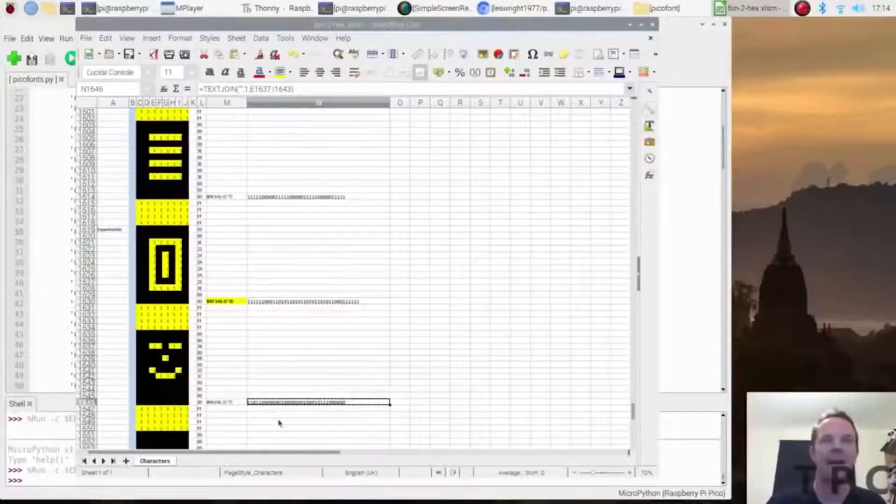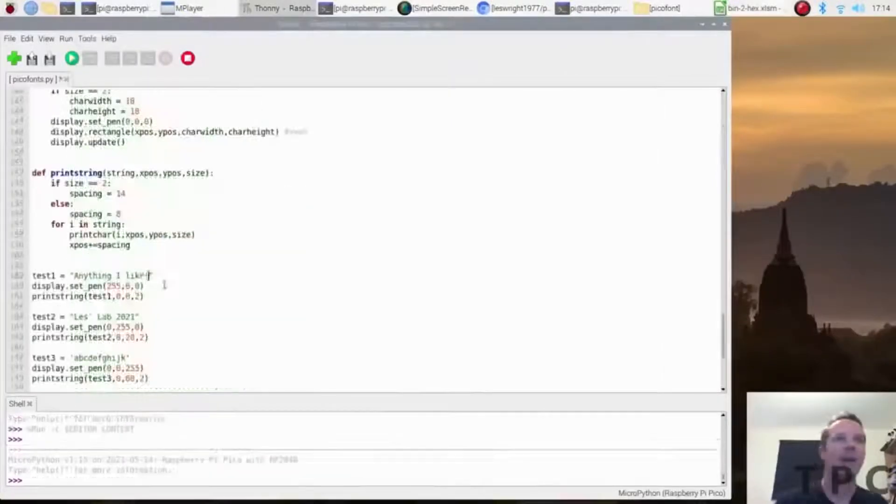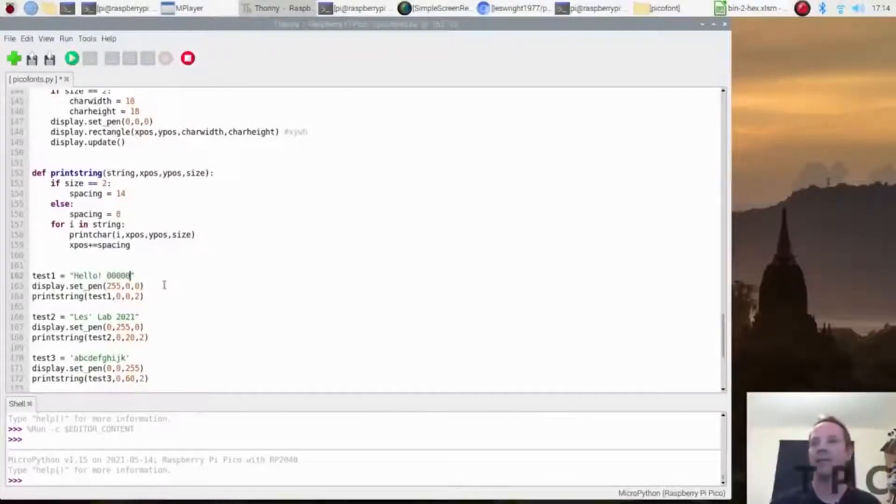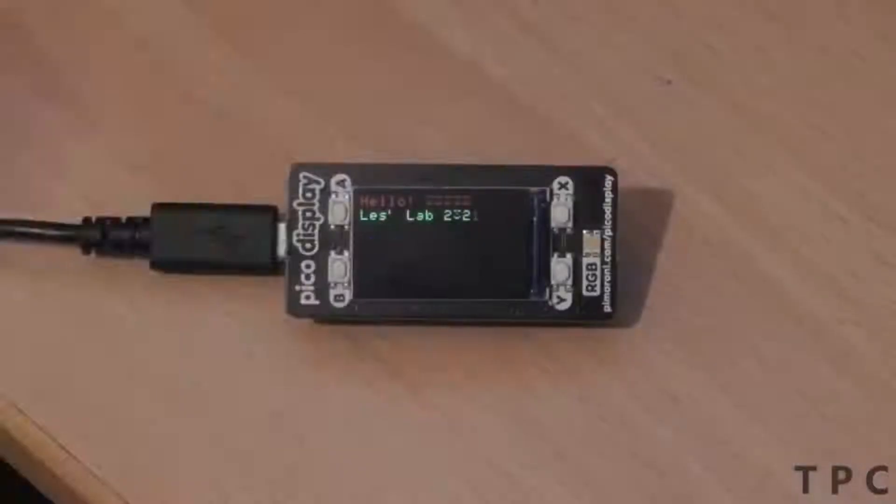Let's look at how to add this custom smiley on the display. In the program, add the text 'hello' and some smiley faces. Hit the run and see the message on the Pico display.